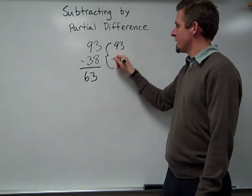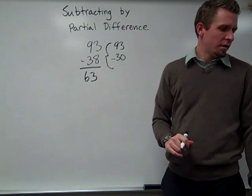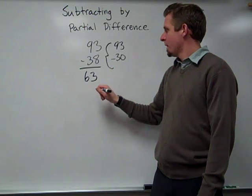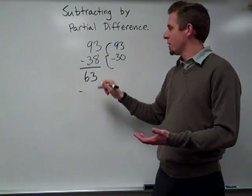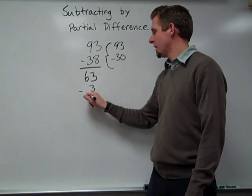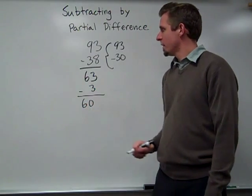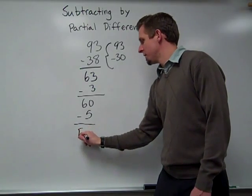So then next, I need to subtract 8 more. So I'm going to basically decompose the 8 into a 3 and a 5. So I first take away the 3, which gets me to 60. Then I take away the 5 more to get me to 55.